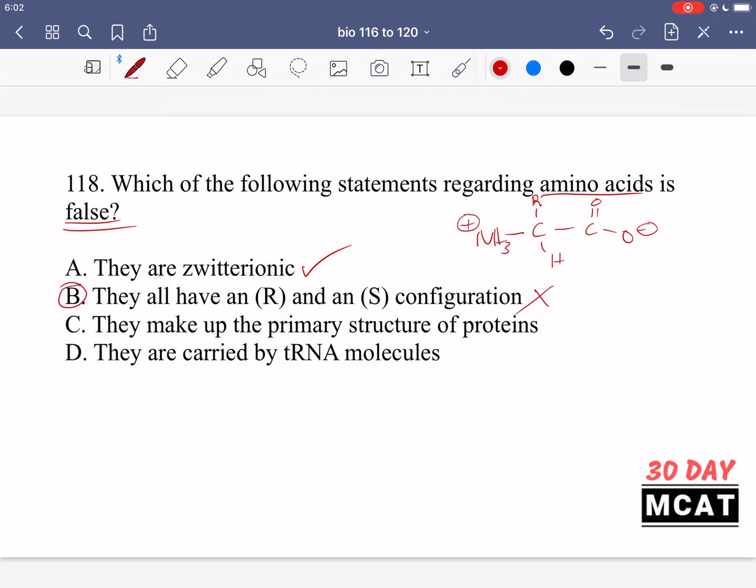So B is the statement regarding amino acids that is false. C is saying they make up the primary structure of proteins. This is true. We have a chain of amino acids called a peptide sequence, which is the primary structure, the first structure of proteins, and then we get later folding to give us secondary and tertiary structures. D is saying they are carried by tRNA molecules. Yes, they are carried by tRNA molecules which bring them to the ribosome structure so that we can get proper translation of the whole protein. So the rest are correct, and B is a false statement.